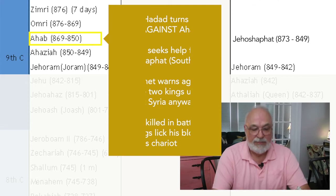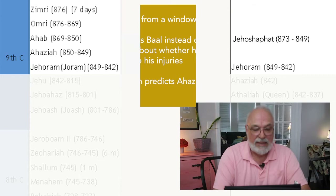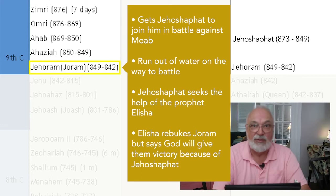Ahaziah succeeds Ahab. He falls from a window and instead of seeking God to see whether he will live, he asks Baal, and Elijah the prophet predicts his death. When he dies, Joram — sometimes called Jehoram — becomes the next king of the north. We will shortly also have a king Jehoram of the south, so keep these two straight in your mind.